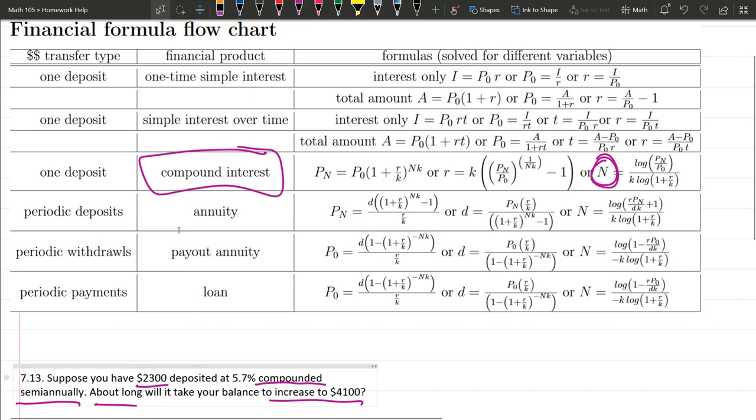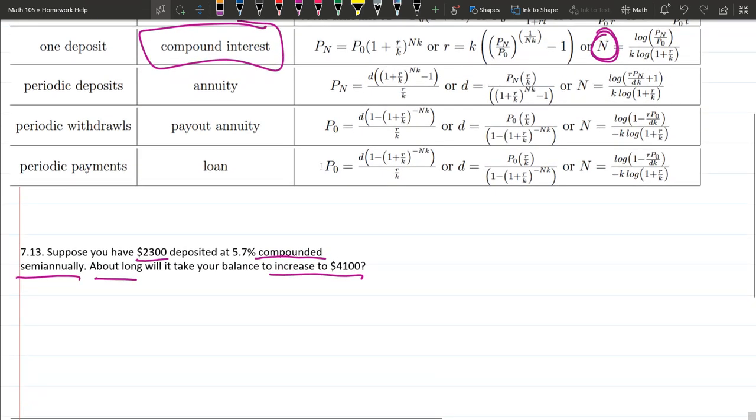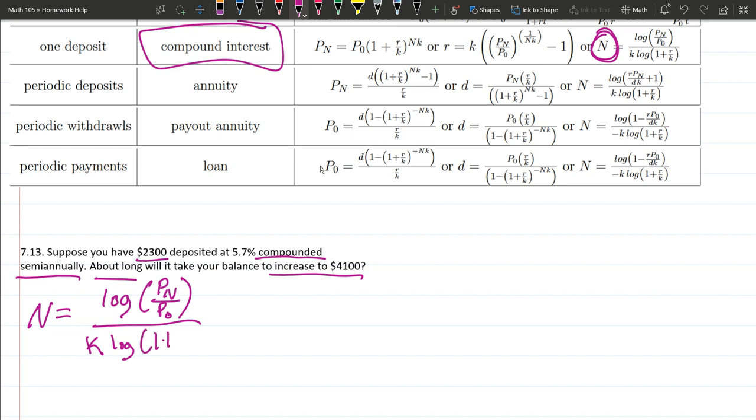So what I'm going to do is go ahead and write this one down. So we have n equals log Pn over P0. P is the principal amount. And we have k times log 1 plus r over k.